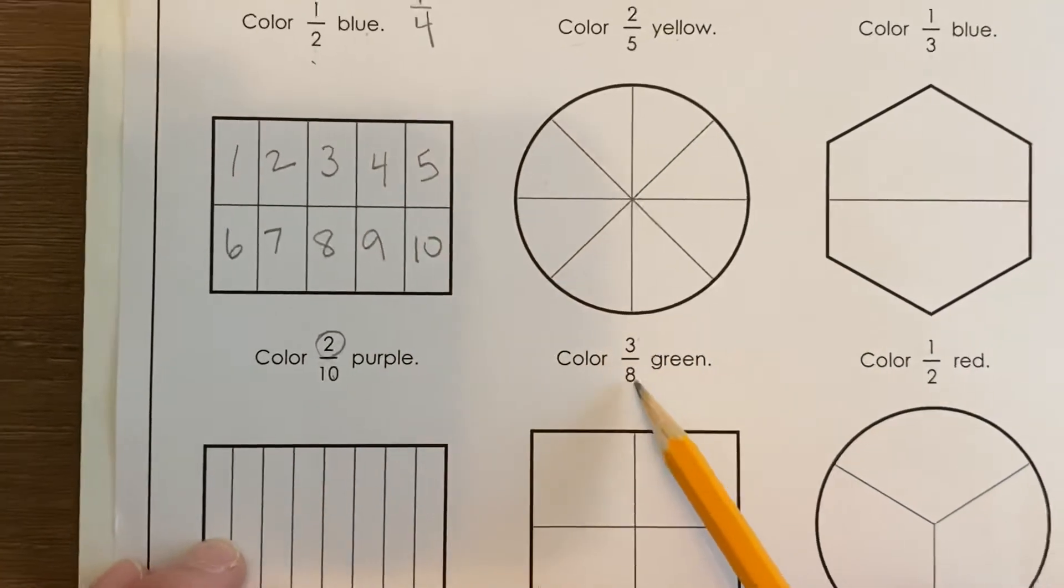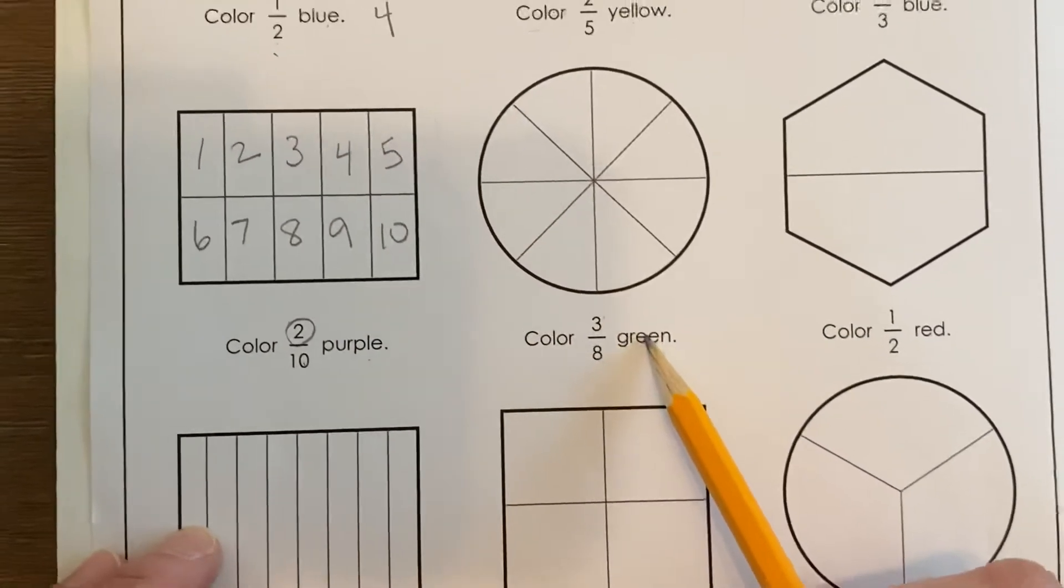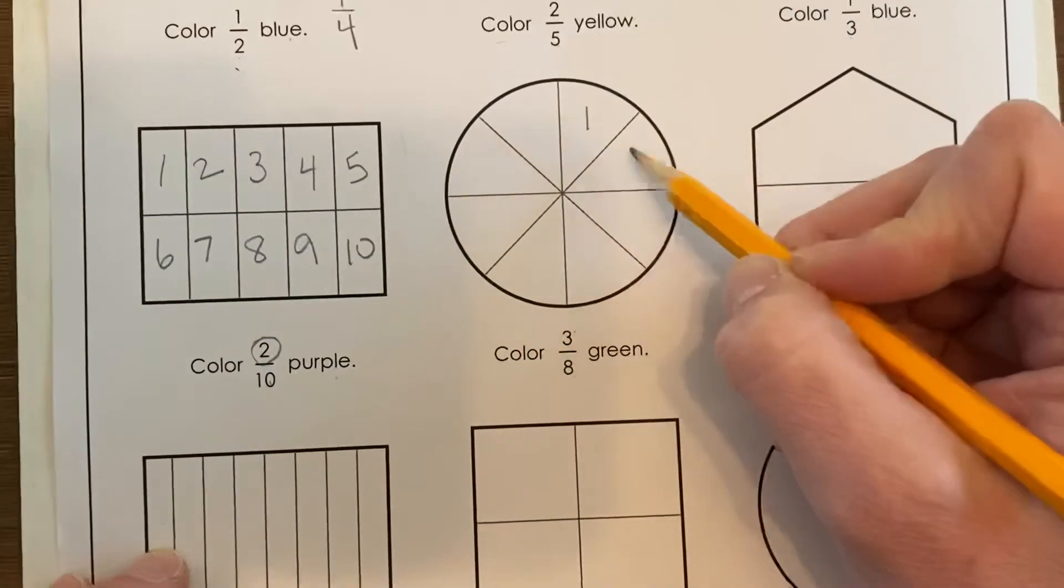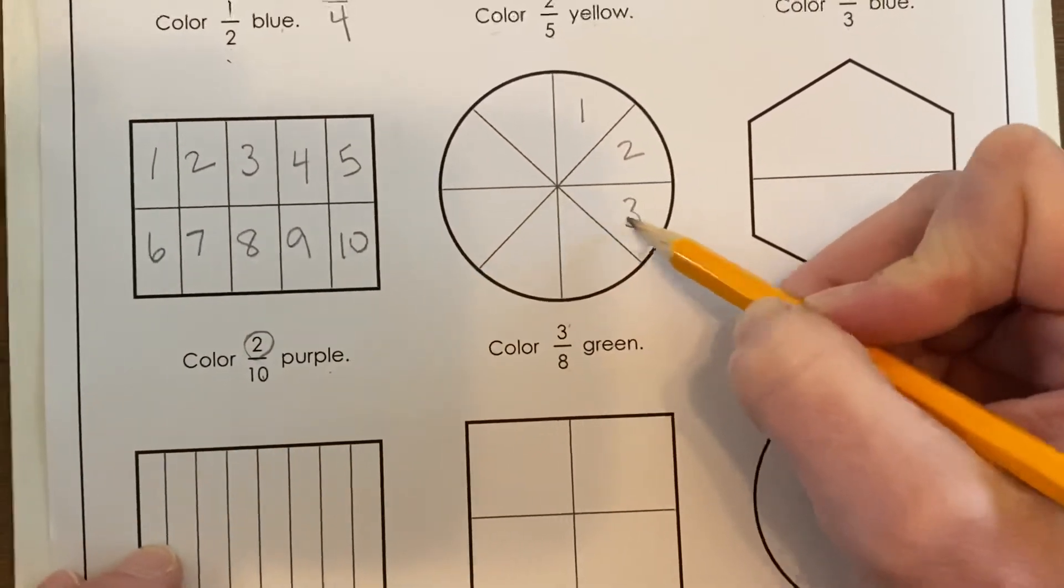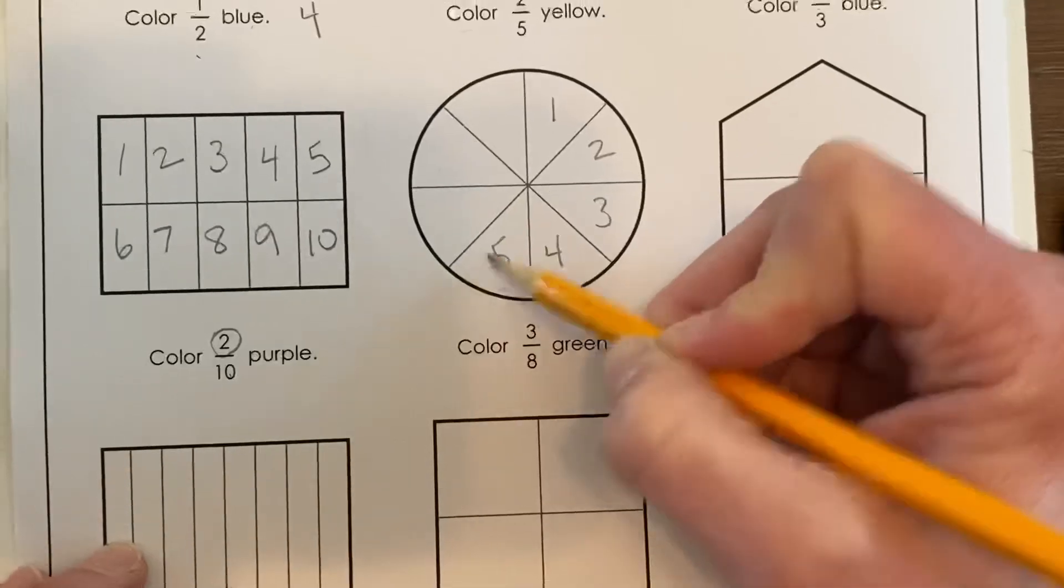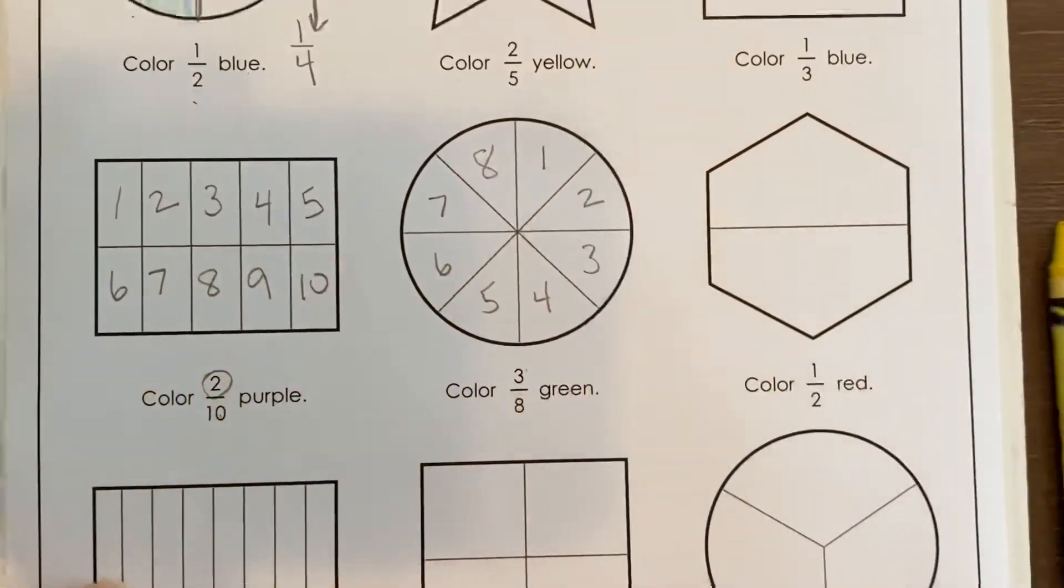Color three-eighths green. Make sure they didn't trick you. One, two, three, four, five, six, seven, eight.